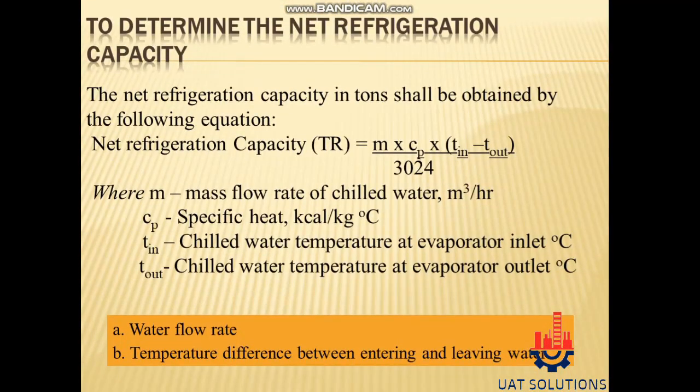To determine the net refrigeration capacity, the net refrigeration capacity in tons shall be obtained by the following equation: Net refrigeration capacity in TR equals M × CP × (T_in − T_out) divided by 3024. Where M is mass flow rate of chilled water in cubic meters per hour, CP is specific heat in kilocalories per kilogram °C, T_in is chilled water temperature at evaporator inlet in °C, and T_out is chilled water temperature at evaporator outlet in °C.